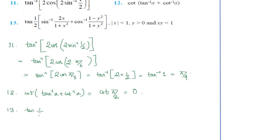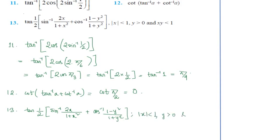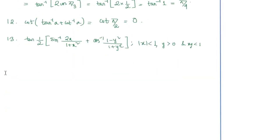Now coming to question 13: we have tan of half of (sin inverse(2x/(1+x²)) + cos inverse((1−y²)/(1+y²))). The conditions given are: modulus of x is less than 1, y is greater than 0, and xy is less than 1. We'll be complying with all these conditions as we reduce this expression.